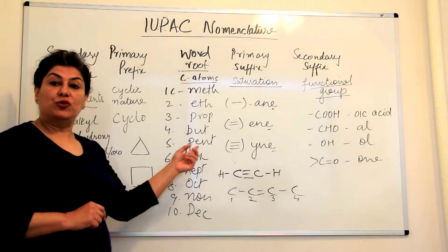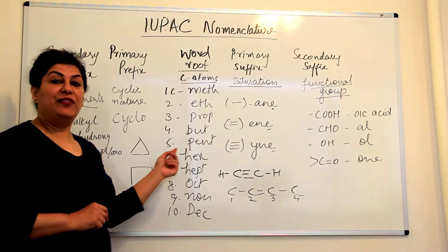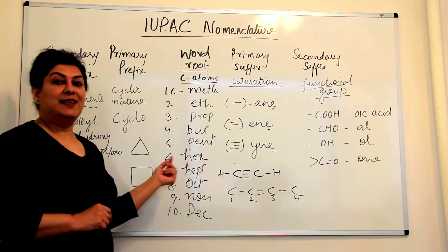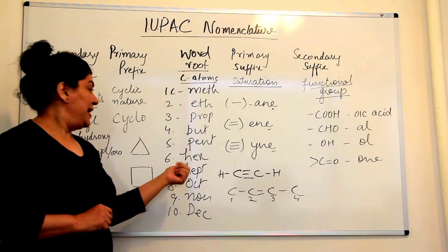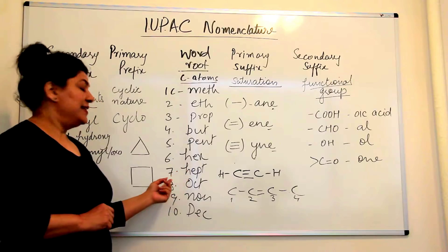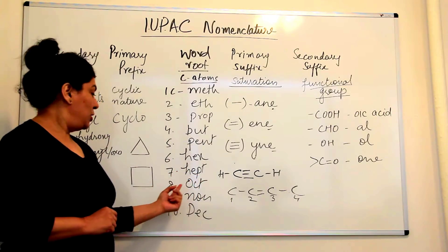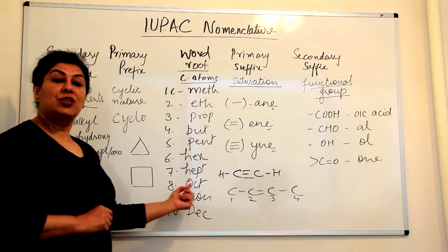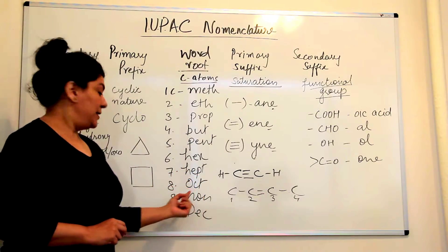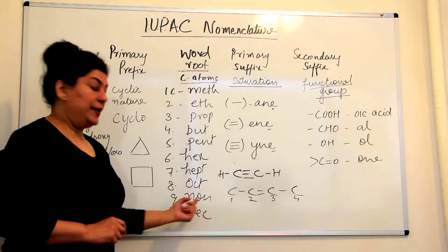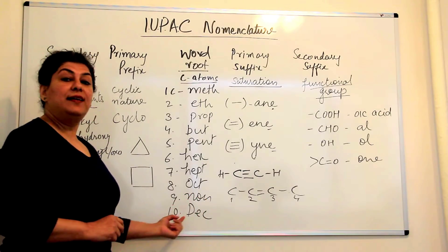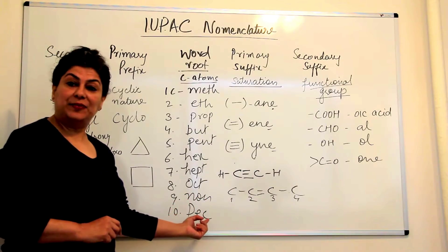Four carbon atoms: 'but.' Five: 'pent.' Six: 'hex.' Seven: 'hept.' Eight: 'oct.' Nine: 'non.' And ten: 'dec.'